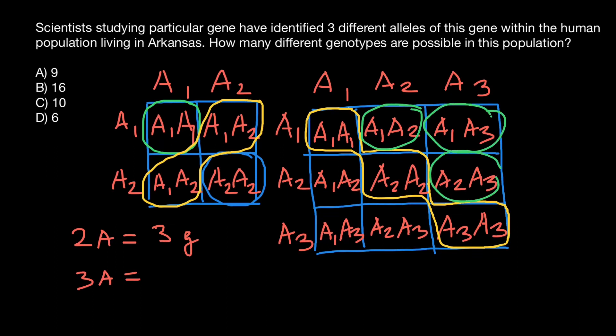That means we can exclude the duplicate genotypes below the diagonal from our calculations. So how many unique genotypes can we get with just three alleles? Counting: one, two, three, four, five, six. As you can see, the answer is six.